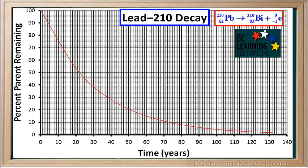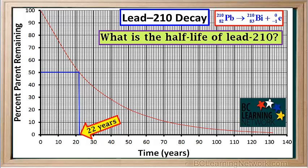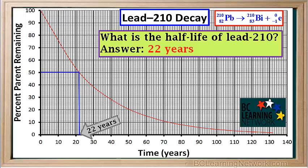Here's a graph showing the beta decay of lead-210. It gives the percent of the parent isotope lead-210 remaining as a function of time in years. We can use this graph to answer several types of questions. The first question: what is the half-life of lead-210? After one half-life, the percent remaining will have gone down to 50%. So we draw a horizontal line from the y-axis at 50% over to the curve, then drop a line down to the time-axis. It hits the time-axis at 22 years, so the half-life of lead-210 is 22 years.